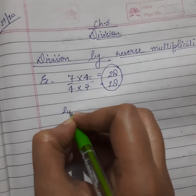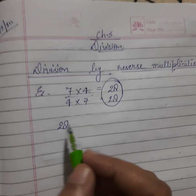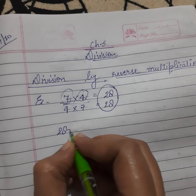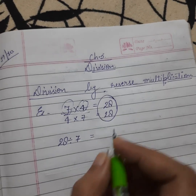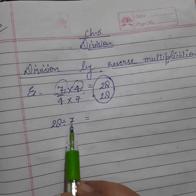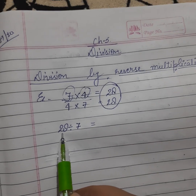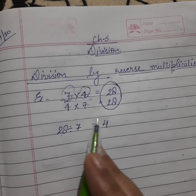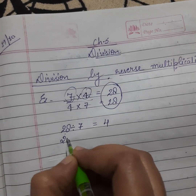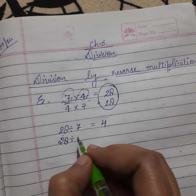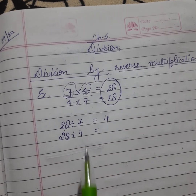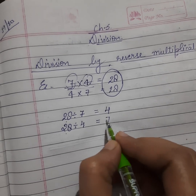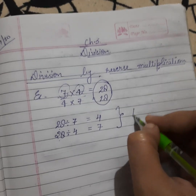So the same thing here: we will take the result, twenty-eight, and divide it by its factors. If I divide twenty-eight by seven, then in the table of seven, how many times does twenty-eight come? Seven fours are twenty-eight. And if I reverse it — divide twenty-eight by four — then in the table of four, how many times does twenty-eight come? Seven times. So this is called reverse multiplication.